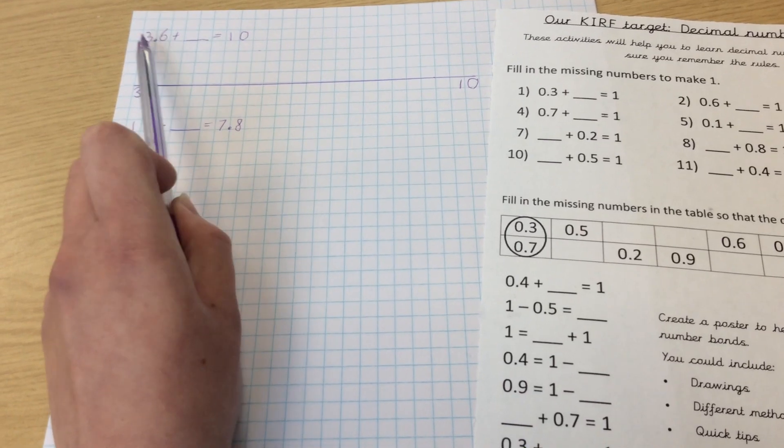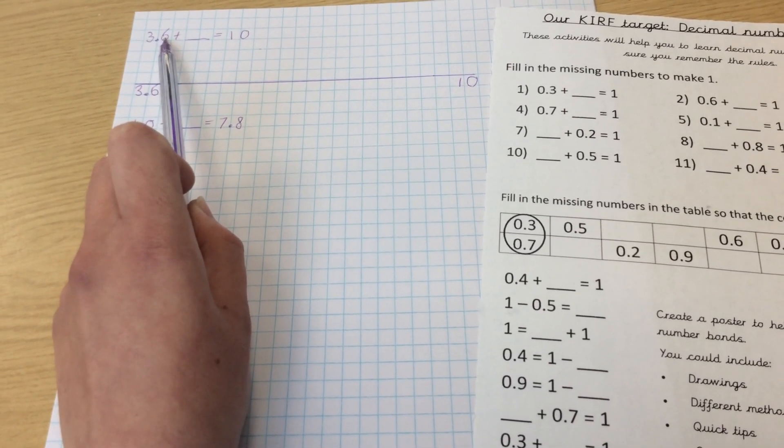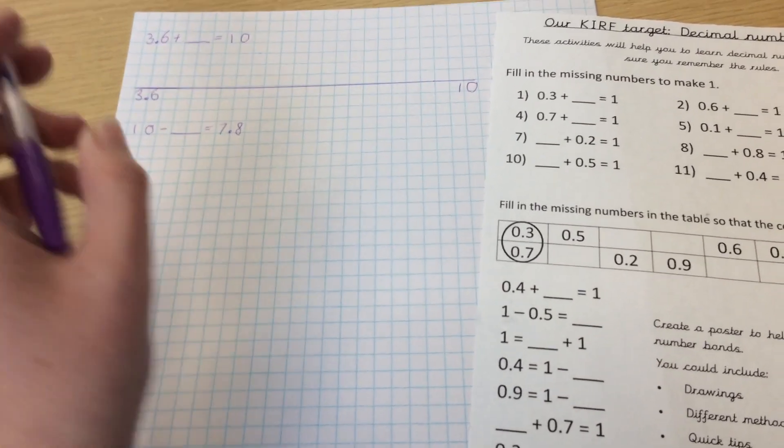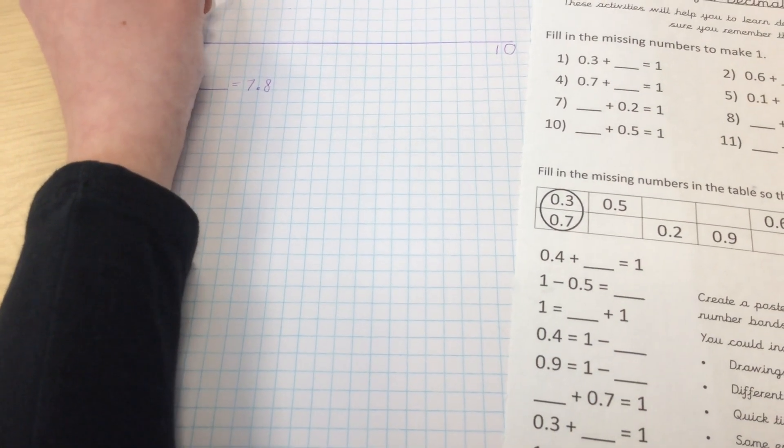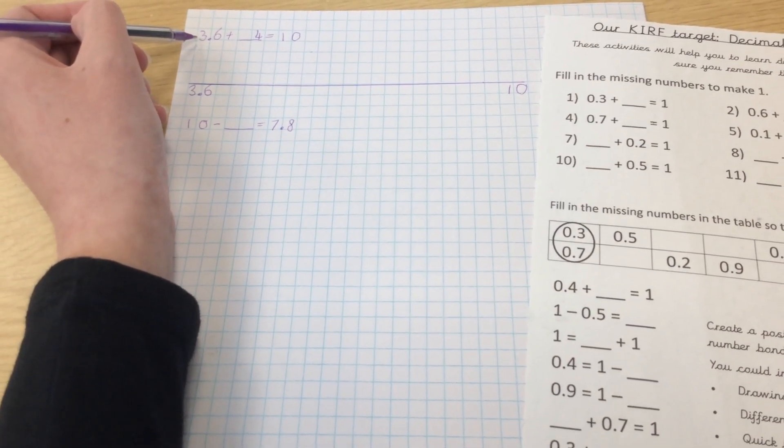Or you can keep it as a decimal and think of it as your number bonds to 10 and to 9. So in your units column you need to make 10. What are you going to need to get from 6 to 10? That will be 4.